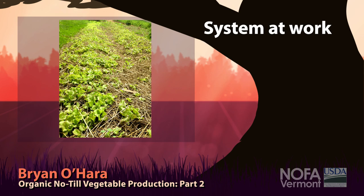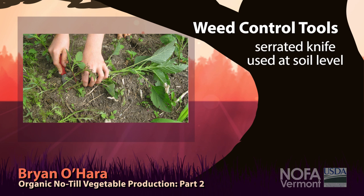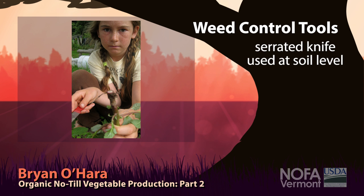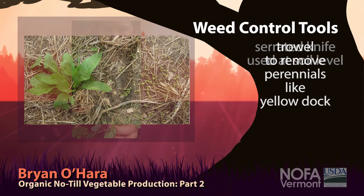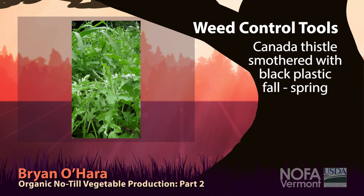Here's our weed control method — since there's no hoeing with broadcast seeding, we use a weed control knife. Here's pigweed and some parsley — my daughter is knifing off the annual weed at soil level, slicing it off without disturbing the soil surface. Weed knives are how we control weeds in the field unless it's a perennial that needs popping out. That is tremendously reduced effort over all of our previous efforts. Perennial enemies include yellow dock, which we pop out with a trowel, and Canada thistle, which we combat with tenacity or black plastic tarps over winter.